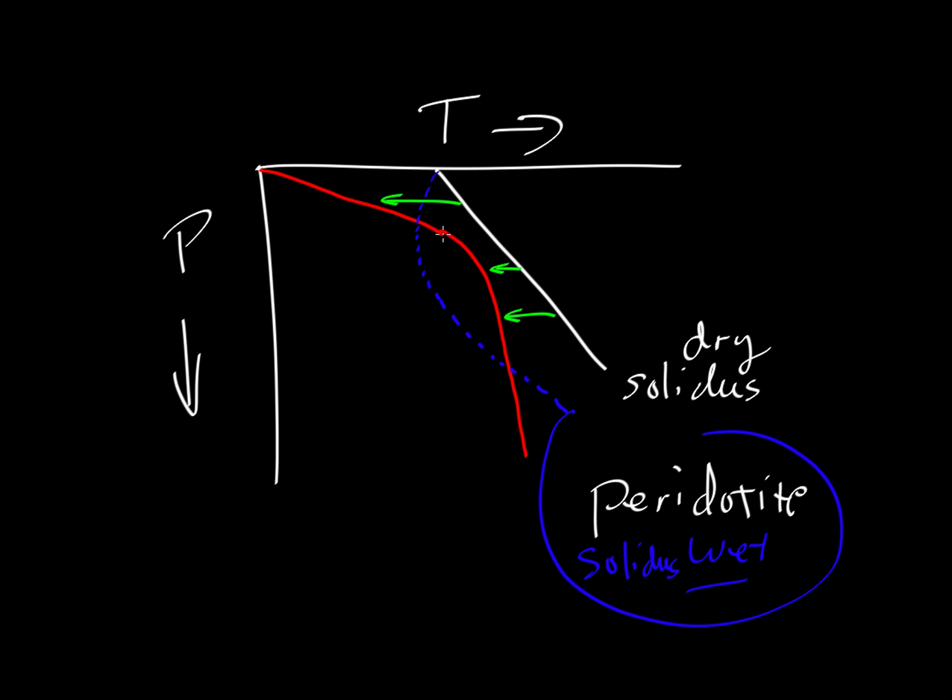And so here, the geotherm is above the wet solidus in this region. So the geotherm is below the dry solidus, but when we add water into the subduction zone, into the mantle wedge, that mantle wedge now has a new composition. It is a wet peridotite with a much lower melting temperature. And so now we have this melting region that can now drive volcanic activity at the surface.